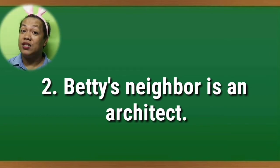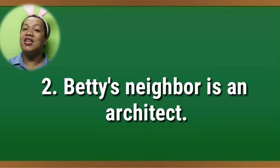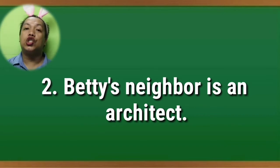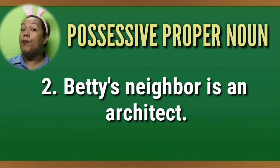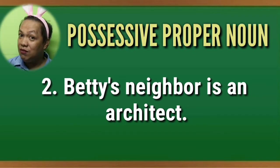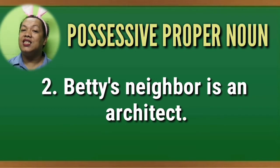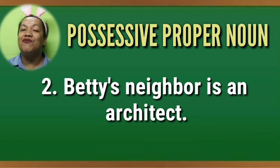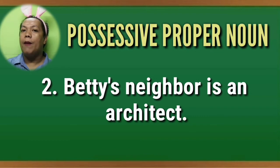The possessive in sentence two is called a possessive proper noun. What's being underlined is the word 'Betty's.' Betty's — or Betty's apostrophe S — is considered a possessive proper noun, because a proper noun is the specific name of a person. Instead of saying 'the lady's neighbor is an architect,' sentence two uses 'Betty's,' which is the specific name of a woman — a possessive proper noun.